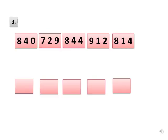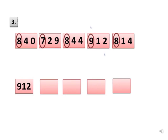To find the greatest number, we will compare the hundreds place digit of the given numbers. In 840 it is 8, in 729 it is 7, in 844 it is 8, in 912 it is 9, and in 814 it is 8. 9 is the greatest, so the number 912 is the greatest number. We will write it in the first box and cross the number so that you don't count it again.